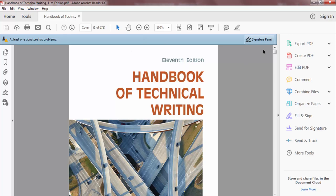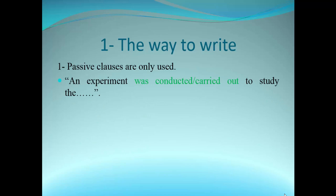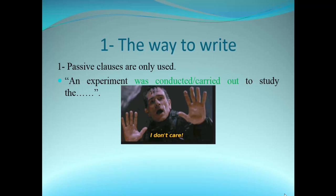Passive clauses are only used — do not use 'we carried out an experiment' or 'I used a thermocouple for the measurement.' Do not use 'I' or 'we.' Just write 'this method was used,' 'an experiment was conducted,' or 'has been carried out.' This is unacceptable because if you use 'I' or 'we,' the reader doesn't care. They care about the scientific procedure. Use 'has been,' 'have been,' 'was,' or 'were carried out.'